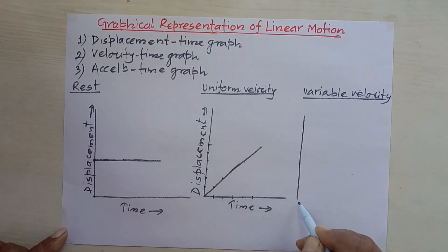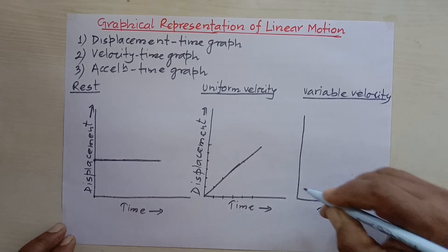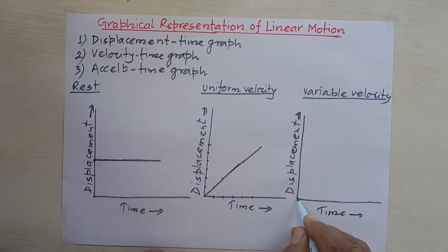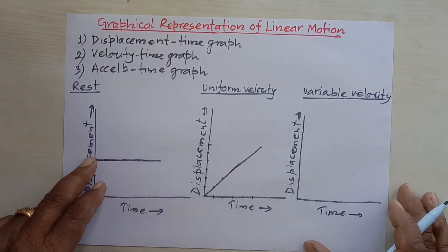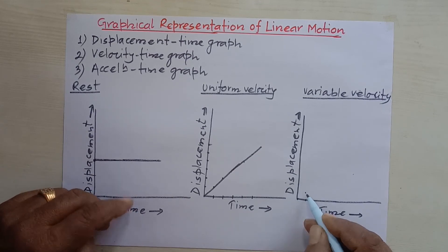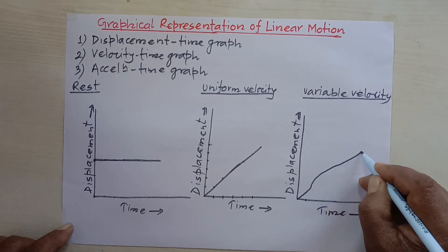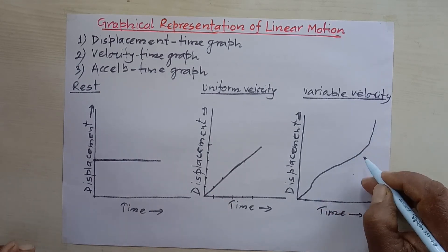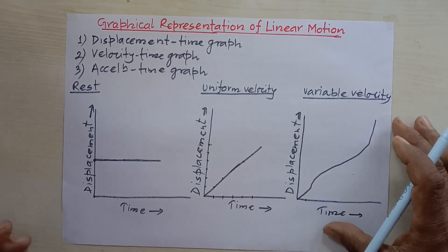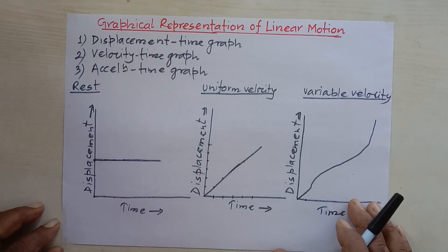Now, variable velocity. Time is taken on the x-axis and displacement on the y-axis. Variable velocity means a body covers different distances in equal intervals of time — for example, two meters in the first second, three meters in the second, one meter in the third. The points fall on a curve line. So the displacement-time graph of a body moving with variable velocity is a curve line.